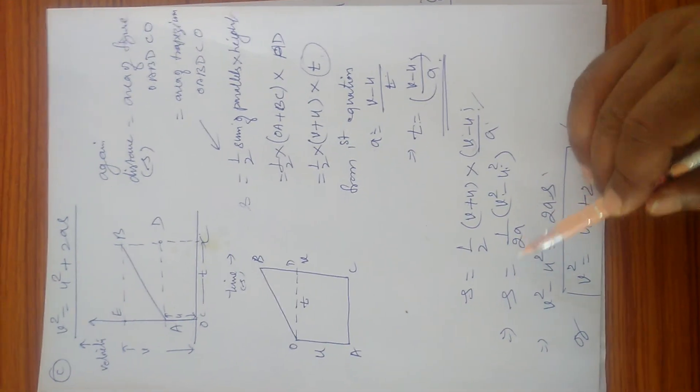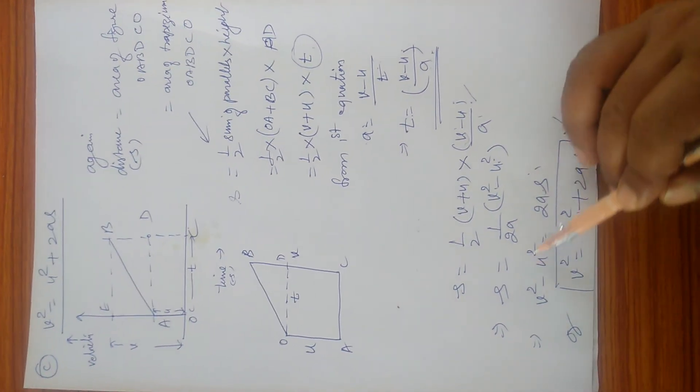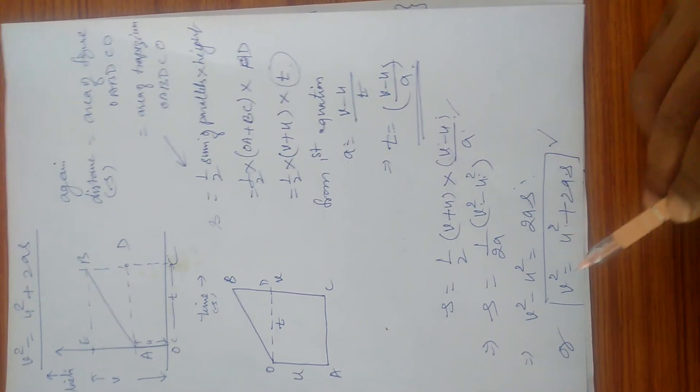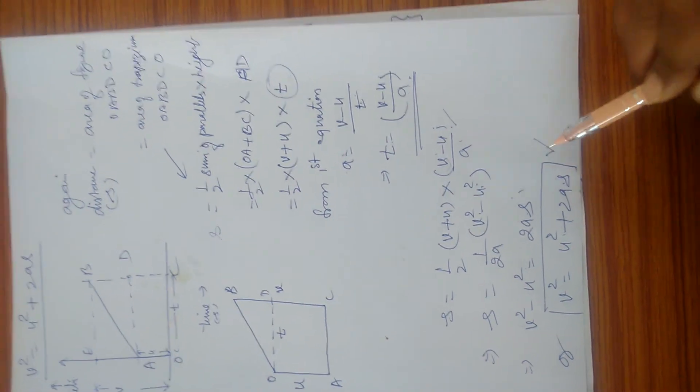Now by cross multiplication, 2as = v² - u². So v² equals u² by transposition. Therefore, v² = u² + 2as.